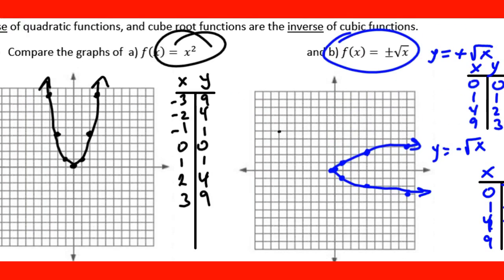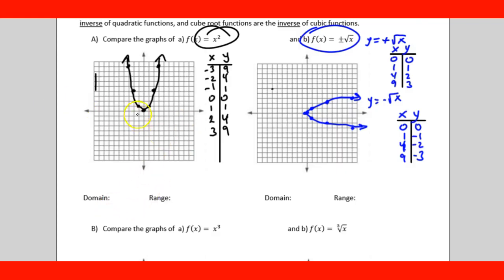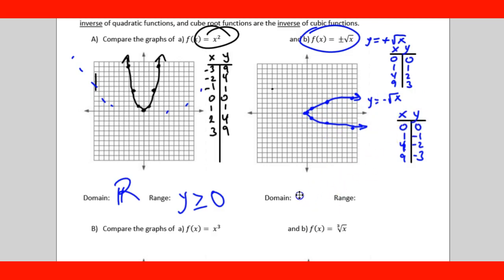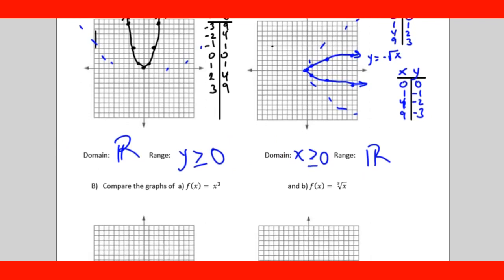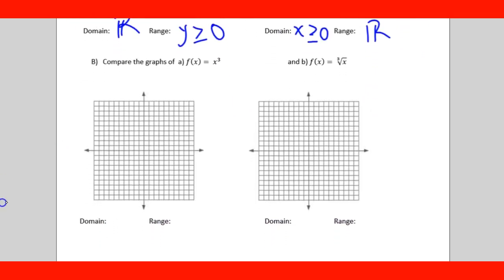Now let's talk about the domain and range of each. For f(x) = x², you can use any x value — it keeps going in both directions — so the domain is all real numbers. The range, however, is y ≥ 0 since y can't go below zero. For f(x) = √x, x can't be less than zero, so the domain is x ≥ 0, while the range is all real numbers. Notice how they are inverses of each other.